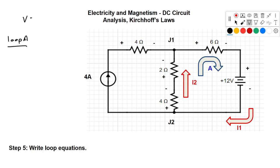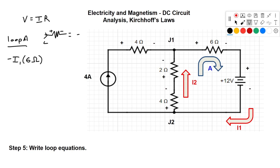Let's write our KVL equation through loop A — the only loop we have to consider. Starting at junction 1, using V = IR: the first thing we hit is the 6-ohm resistor, current I1, going positive to negative, so it's negative 6I1. Next we hit the voltage source, also positive to negative, so negative 12 volts. Coming up through junction 2 and through the 4-ohm resistor, current I2, positive to negative: negative 4I2. And lastly, negative I2 times 2 ohms. All equals zero.